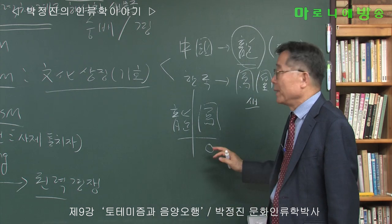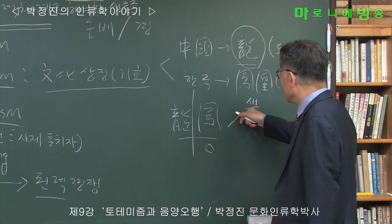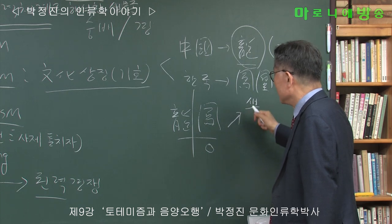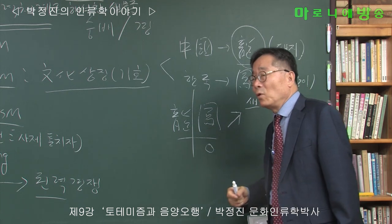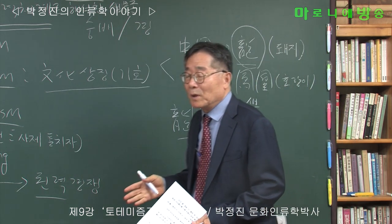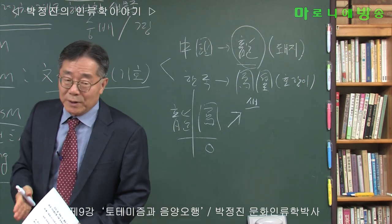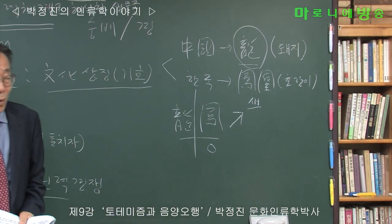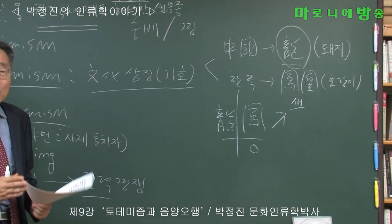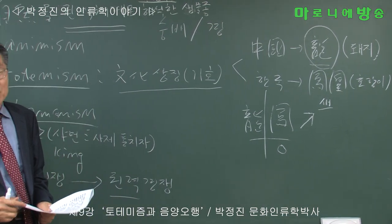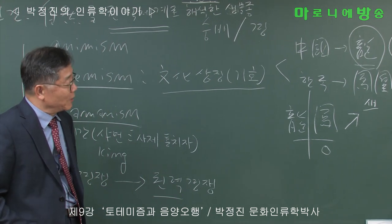우리 토템을 거슬러 올라가면 우리 토템은 용이라기보다는 봉황을 이야기합니다. 봉황은 새 종류, 신령스러운 새를 이야기해요. 호랑이도 우리 토템 중에 하나라고 했죠. 특히 동아시아를 봤을 때 경쟁을 하는 게 용과 봉입니다. 우리나라 대통령 관저 문장은 봉황이죠. 봉황을 평소에는 별로 생각 안 하지만 사실은 우리 무의식 깊은 곳에 있는 게 봉황입니다. 중국 문화의 영향으로 용도 우리 임금을 상징하고 용상이라고 하지만, 보다 더 깊숙한 곳은 봉황입니다.